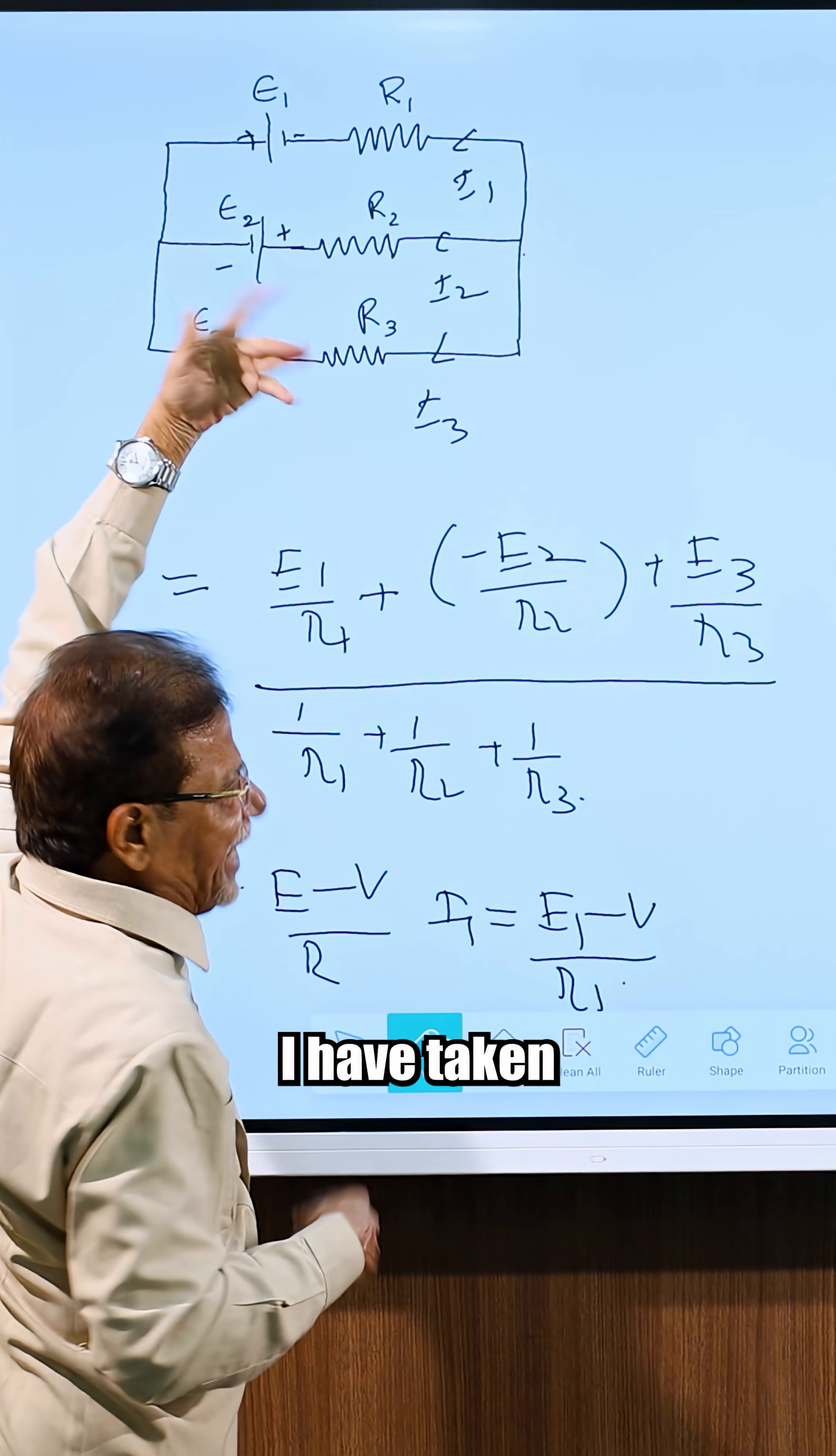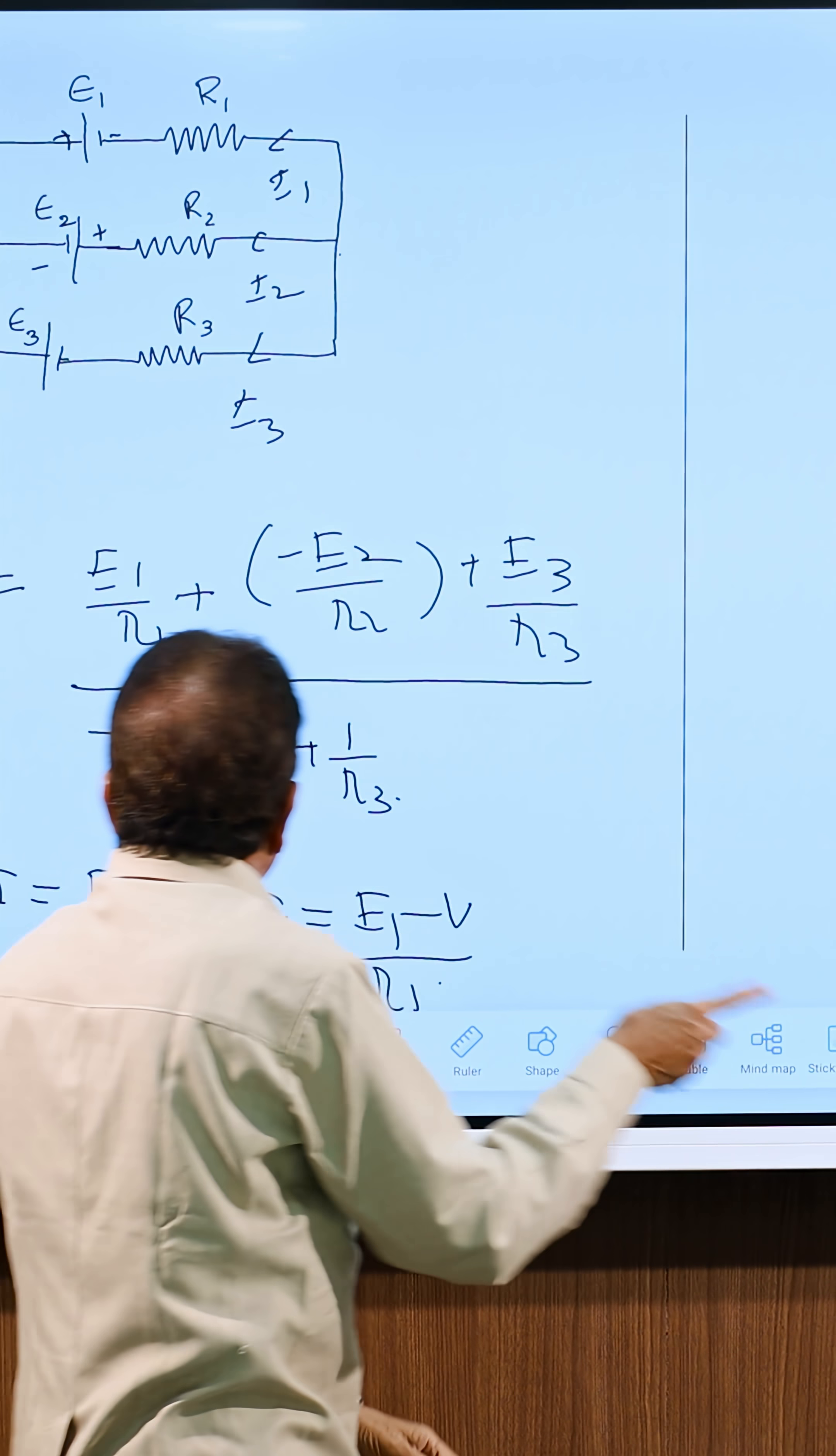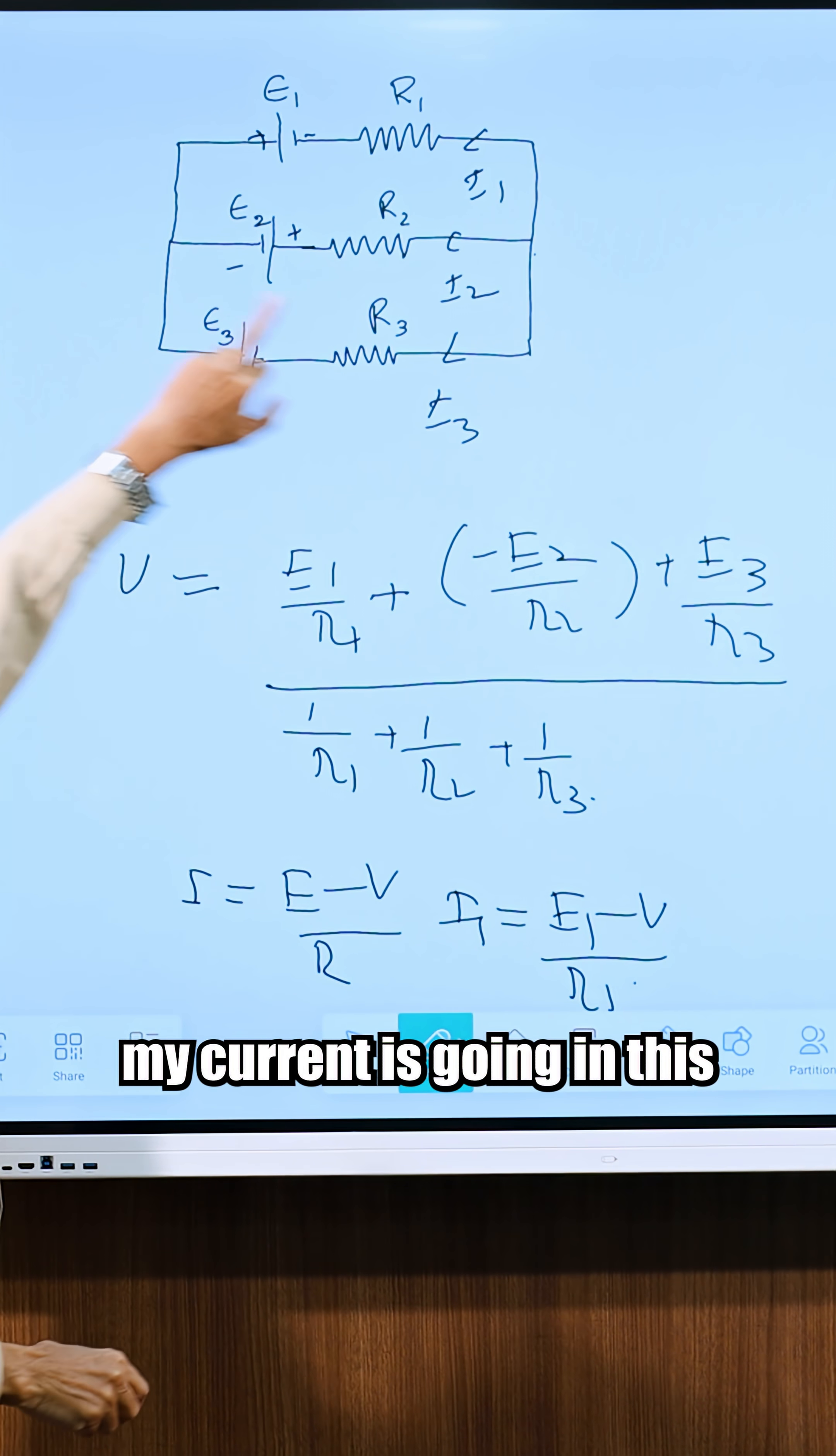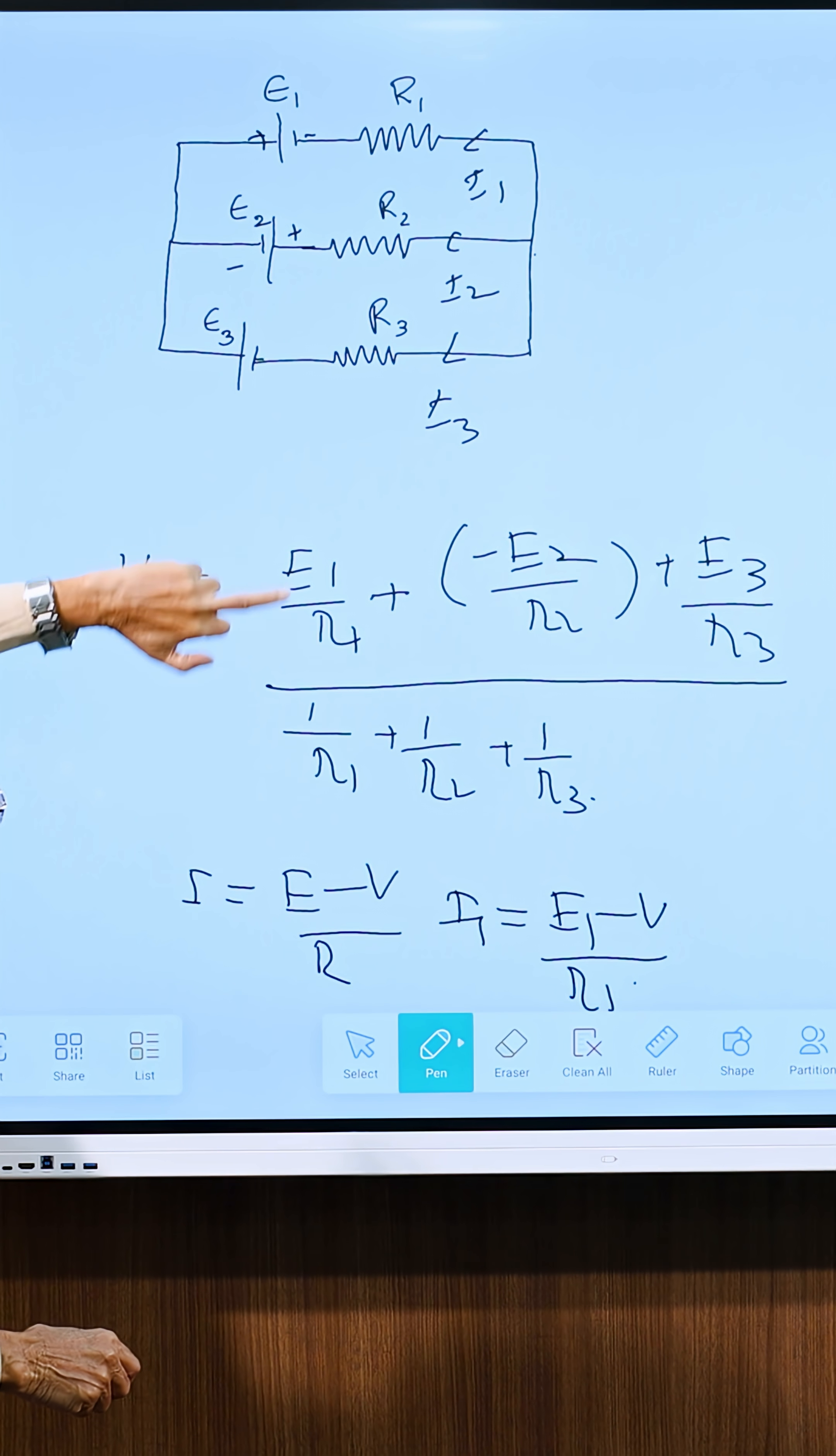I have taken any direction of the current. I have taken all the currents in the same direction. Apply the same formula. Right? Common potential. V common is equal to again sigma E upon R upon sigma 1 upon R. E upon R will be here. Back current is going in this direction. And battery current is going in this direction. In this direction, we will be positive. So it will be E1 upon R1.